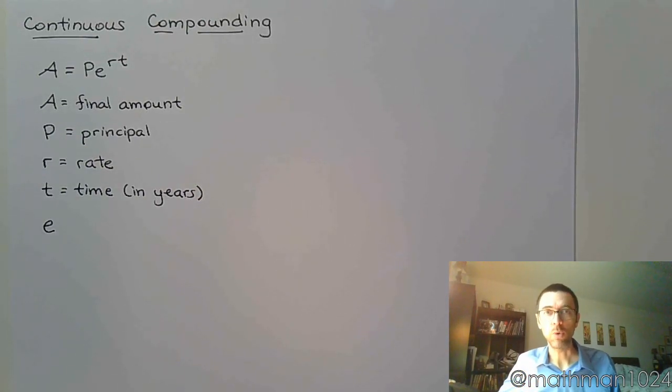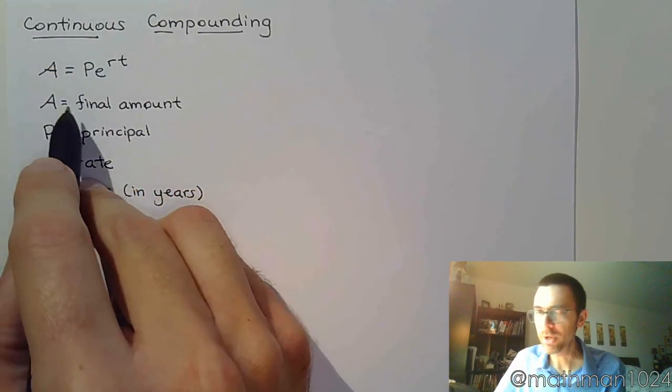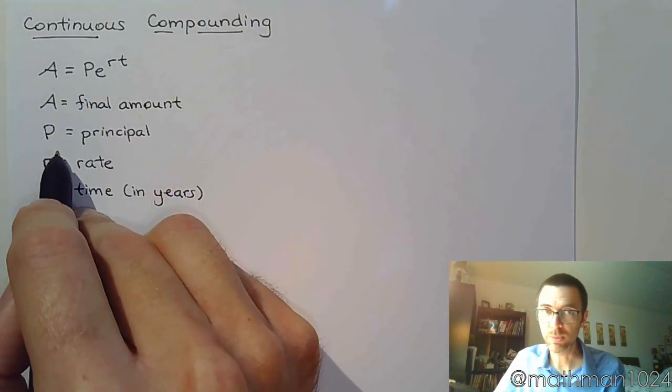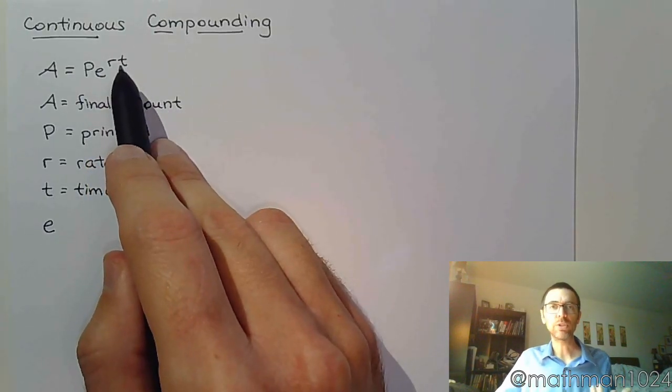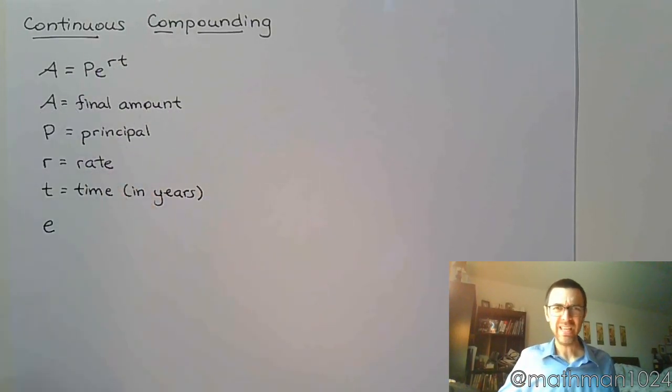So if that's the case, we have this formula for continuous compounding. A lot of this stuff is going to be the same. A is still your final amount, P is your principal, r is your rate, and t is still time measured in years. But the e, e is a very special constant. It's called Euler's constant.